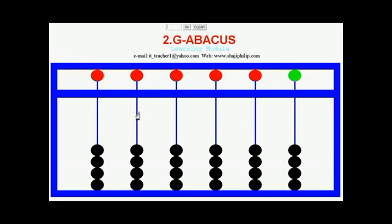That means in the units rod, each of the earth beads will be having one value each. And the value of the earth beads in the tens rod will be having value ten each when it is set. At the same time heaven beads to set it should come down and it should be moved up to reset.